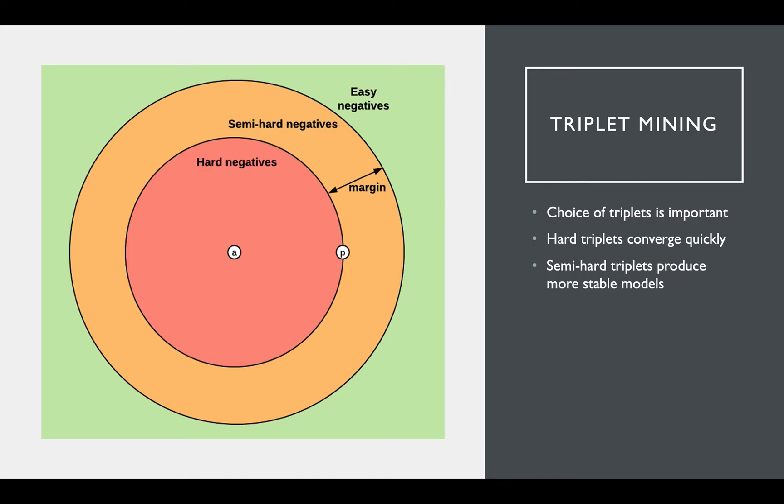In general, triplet loss tends to perform better than pairwise loss, despite the added concern of triplet quality. Google was actually able to achieve state-of-the-art facial recognition with this triplet mining approach.